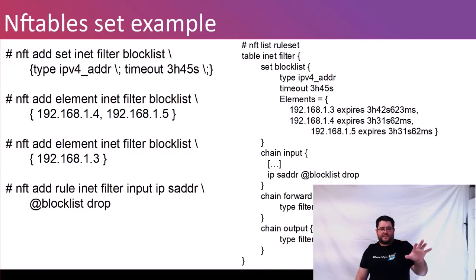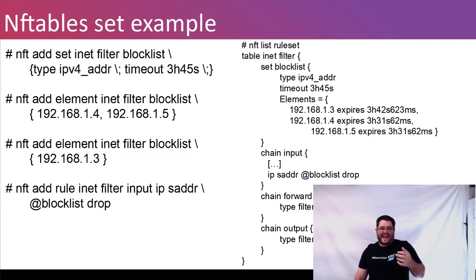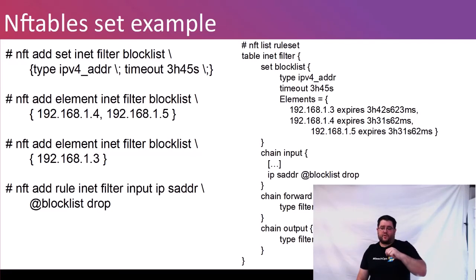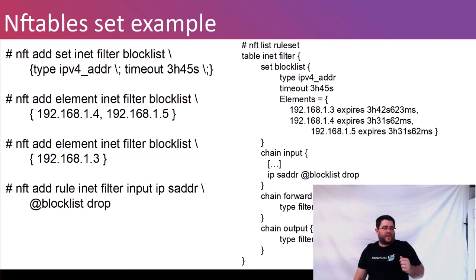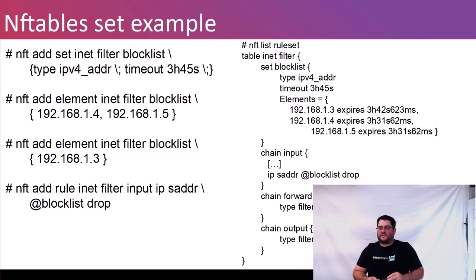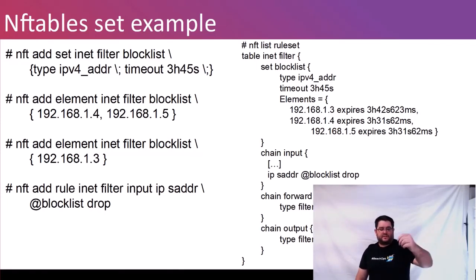Quick example: a block list of IP addresses I don't want accessing anything on my network. We set up a block list where anything added to it times out after three hours and 45 seconds. Once an IP address is put in there, there's a timestamp, and once that timer exhausts, it is automatically removed from the list. IPset has a very similar mechanism, but nftables already has this built in really well. The rule set shown here is how you would reference that block list — that's the output of 'nft list ruleset', exactly what the firewall was seeing.